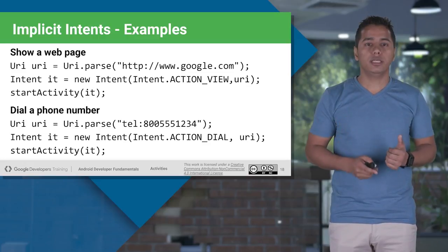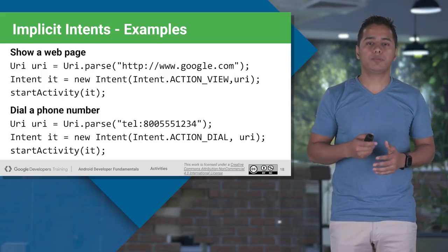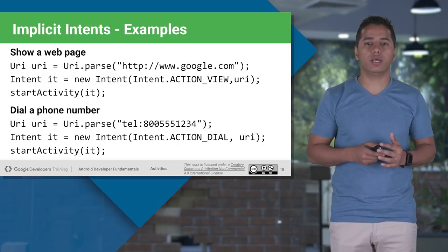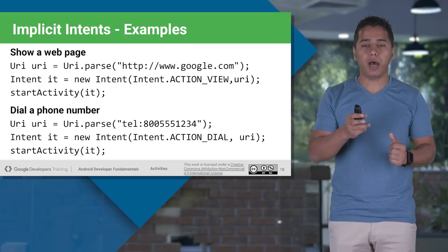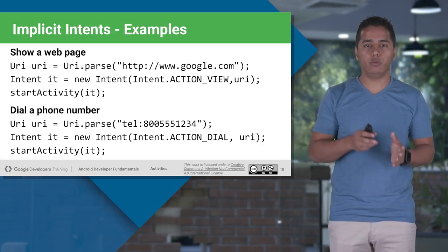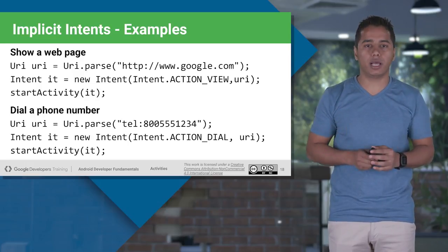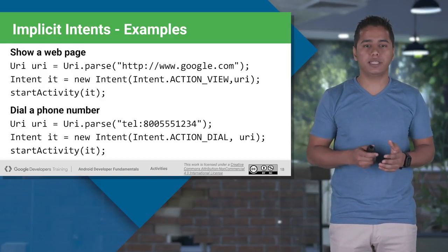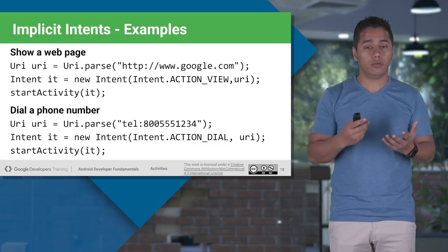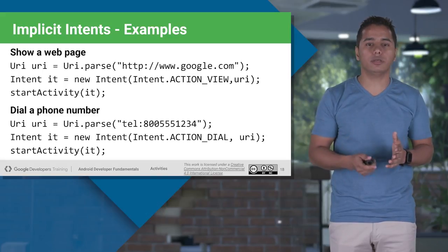Here are some examples of implicit intents. To view Google's website, use URI for Google along with the action Intent.ACTION_VIEW, which is a generalized action. You can pass the URI as a second argument when declaring the Intent object, or use setData to pass the URI separately, then trigger the intent with startActivity. For a dial action, the data URI will be 'tel:' followed by the phone number, and then trigger the activity.